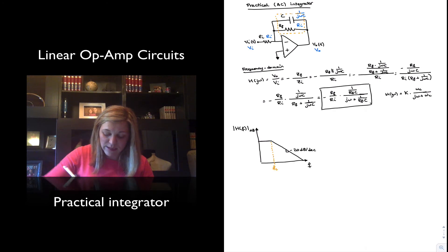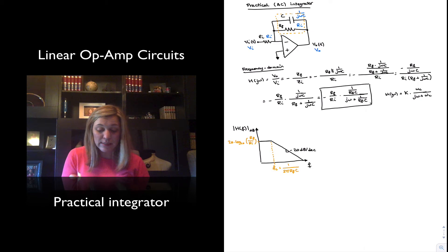Notice that fC is simply 1 over 2 pi RF times C, since omega C is equal to 1 over RF times C. The value of the magnitude in the passband will be equal to 20 times the log base 10 of RF divided by Ri, and that will be at DC when the value of omega is equal to 0.